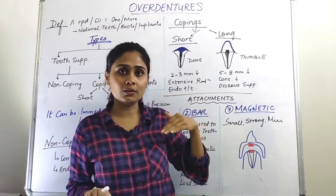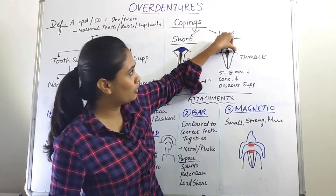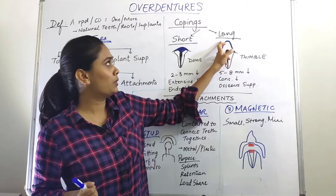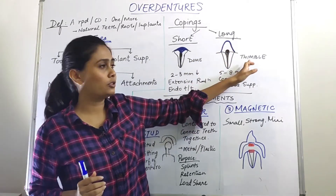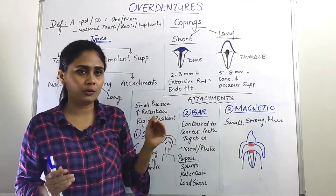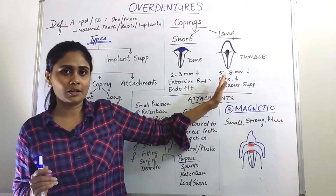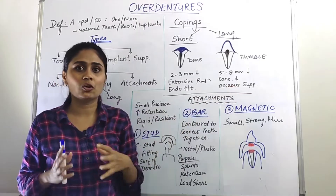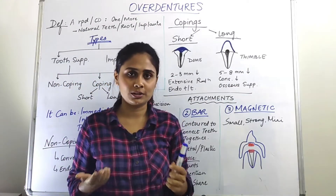The long type of coping is known as thimble shape. I have drawn a blue outline over this crown — this is a prepared abutment tooth. The crown-to-root ratio will be much larger here. There will be a conservative reduction of five to eight mm of crown structure removed. For this thimble type of coping, the abutment needs to have great osseous support.